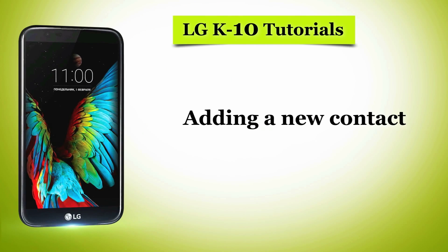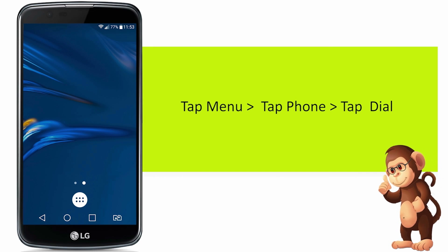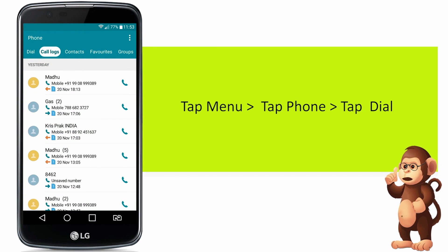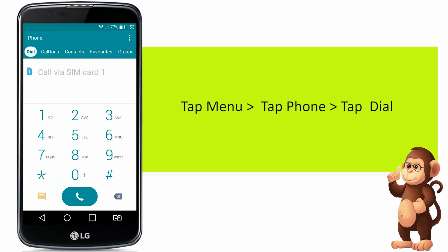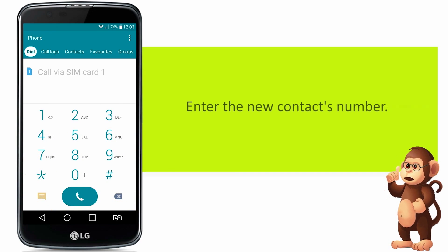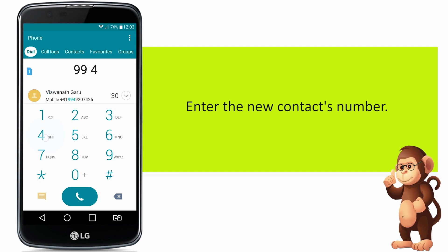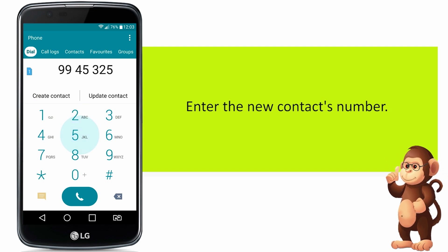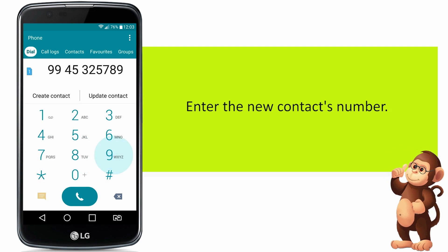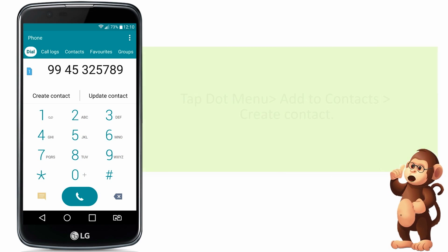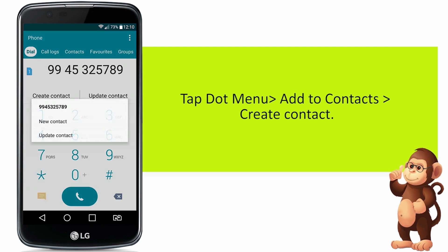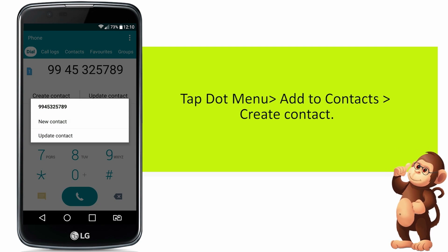Now, let us see how to add a new contact. Tap Menu. Tap Phone. And then, tap Dial. Enter the new contact's number. Tap Dot Menu. Add to Contacts. And then tap, Create Contact.